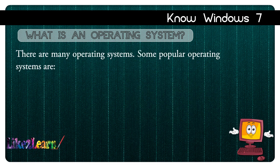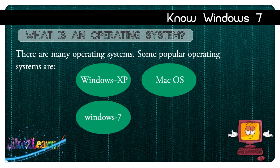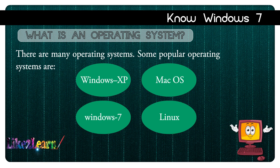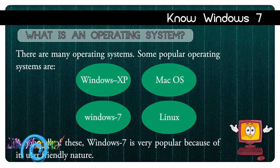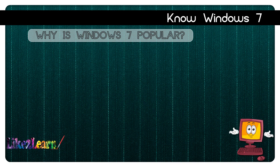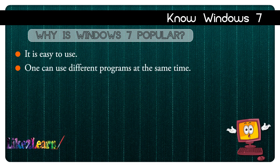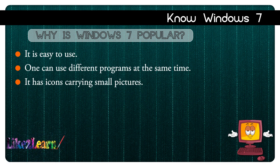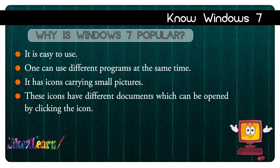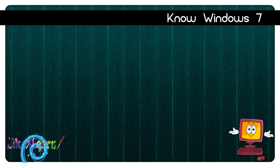There are many operating systems. Some popular operating systems are Windows XP, Mac OS, Windows 7, and Linux. Among all of these, Windows 7 is very popular because of its user-friendly nature. Windows 7 is easy to use, one can use different programs at the same time, it has icons carrying small pictures, these icons have different documents which can be opened by clicking the icon, and Windows 7 remembers all the text-based commands of a computer.